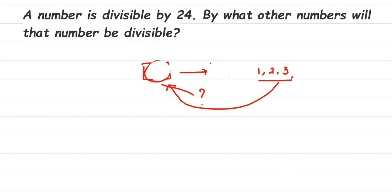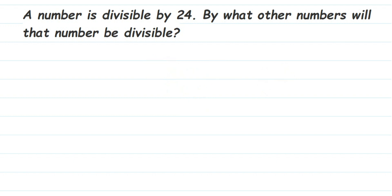In the given question, in place of 6 we have 24, and we don't know the number but we have to find which other numbers divide it. So we're going to take the factors of 24 — that is, which numbers can divide 24, or in which tables does 24 appear.